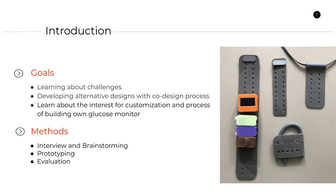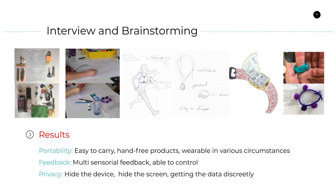To explore our goals, we took a three-part strategy: exploring, prototyping, and testing. We first conducted a brainstorming session with people diagnosed with type 1 diabetes to learn more about their challenges with current glucose monitors. They developed ideas and sketches that address their concerns. Our discussion revealed three key design aspects important for customization: portability, feedback, and privacy of use.